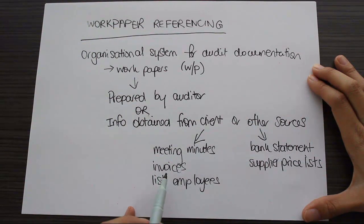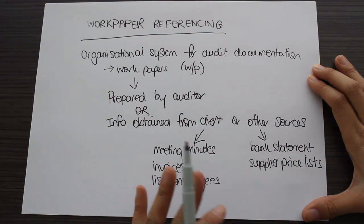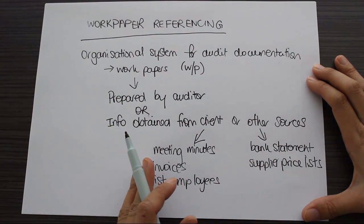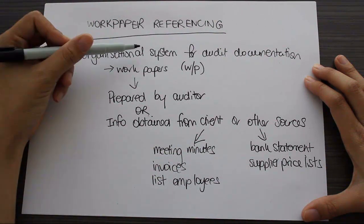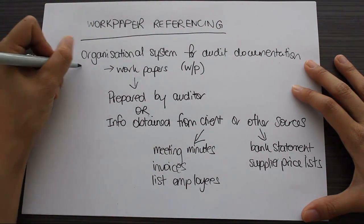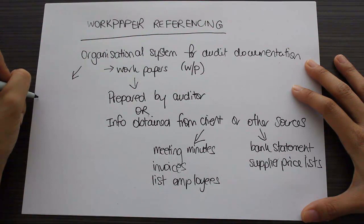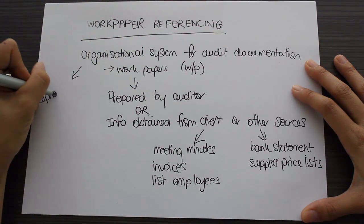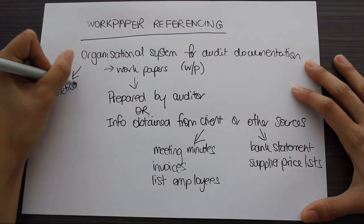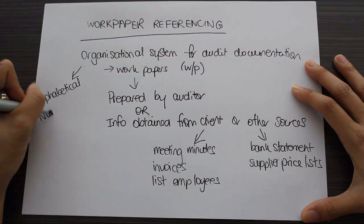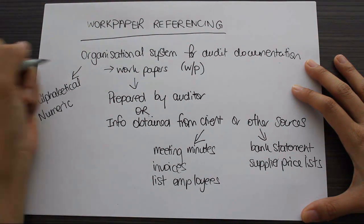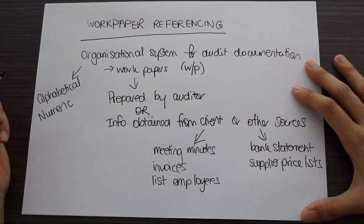So all of these will form work papers that need to be kept within the audit documentation in some way, shape or form. Now, we need to have some sort of organizational system for this documentation. That organizational system could be alphabetical, but it would make it quite difficult. Instead, we tend to see numeric organizing systems for work papers.